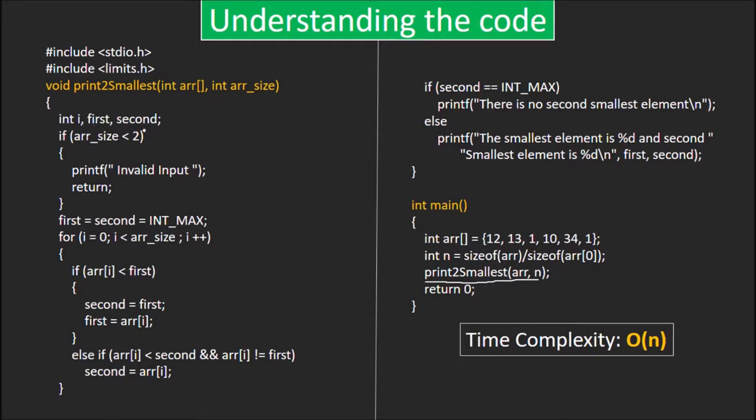Let's look at the function now. First and second store the smallest and second smallest elements respectively and are initially infinite. Now, if array size is less than 2, we cannot print smallest and second smallest. So, it's a case of invalid input.